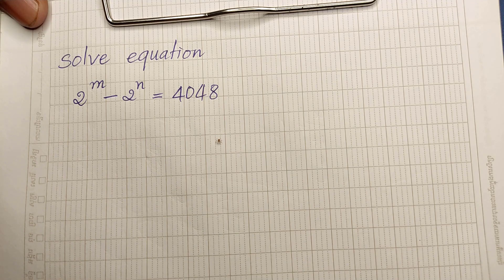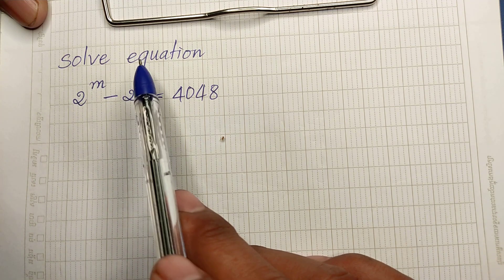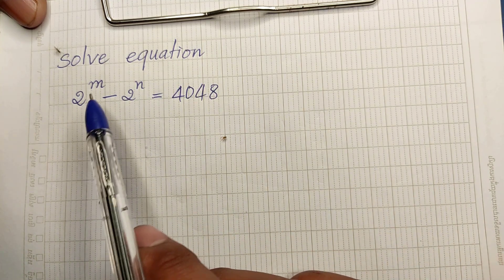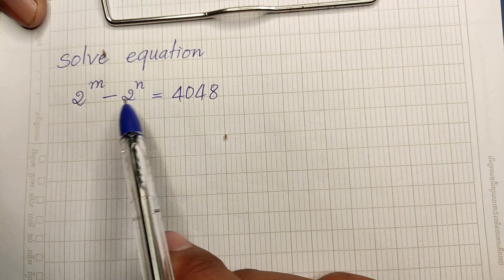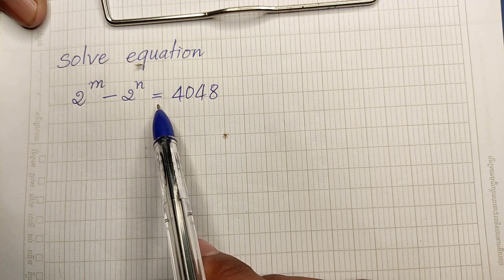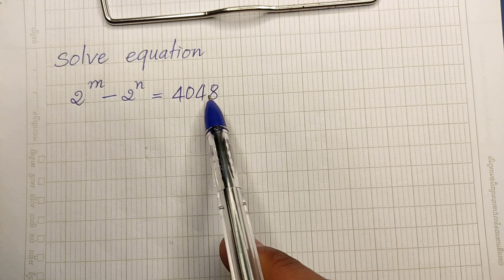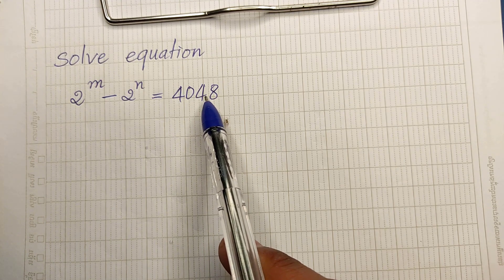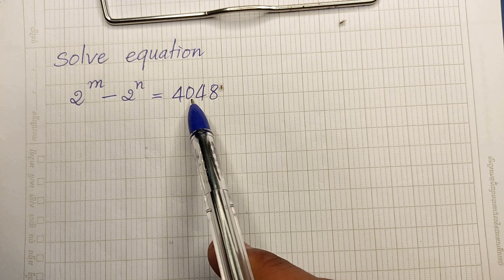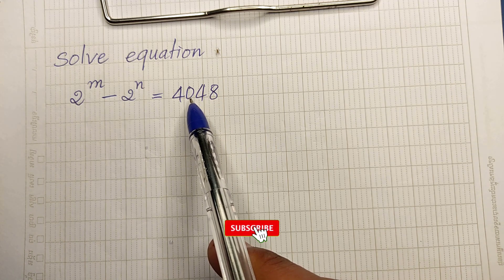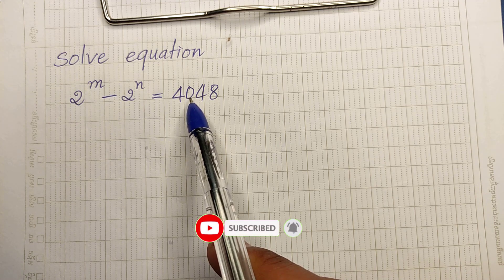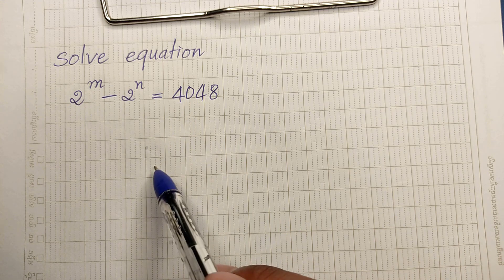Hello everyone, welcome to my YouTube channel. Today I have one exercise: solve the equation 2 to the power m minus 2 to the power n equals 4048. I want to show you how to solve this. Please don't forget to subscribe to my channel for more exciting videos, and now we go to the solution together.